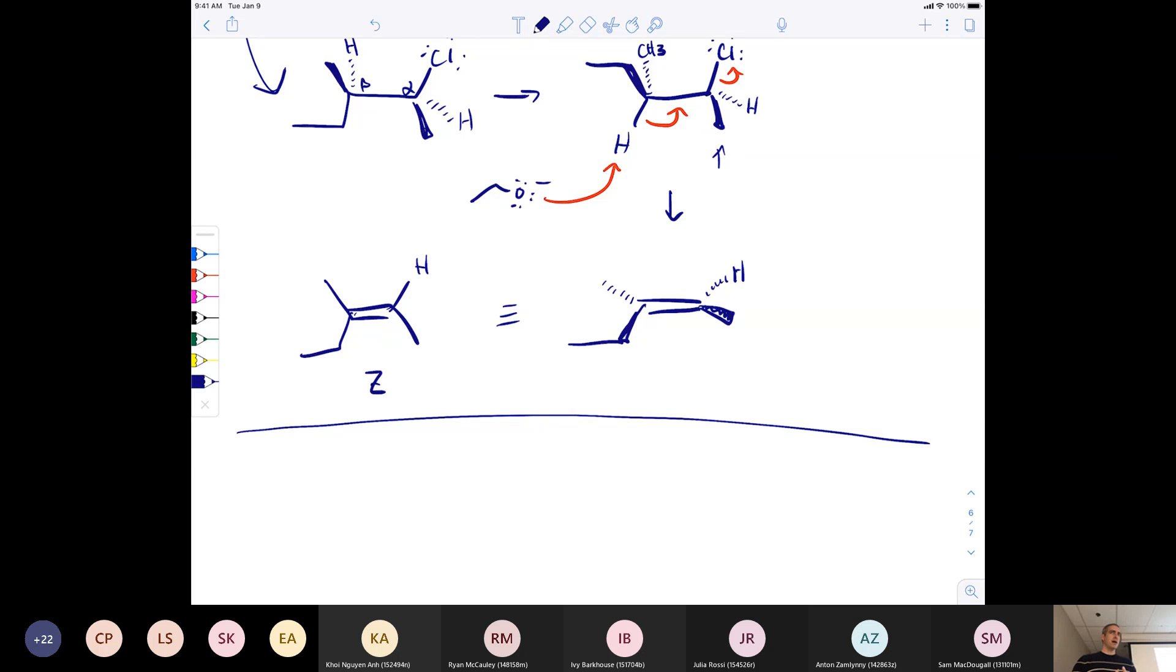The only difference is now we have to worry about rearrangements in the case of SN1 and E1. Whenever you have SN2, you always got to invert the chiral center. We always ask a question where we ask you to draw the product for an SN2 reaction, and it's always a chiral center. Make sure you invert the chiral center if it's SN2. E2 has this anti-coplanar stuff that's important, especially if it's on a ring. Sometimes certain paths are blocked because you can't make the leaving group and the hydrogen be anti-coplanar.